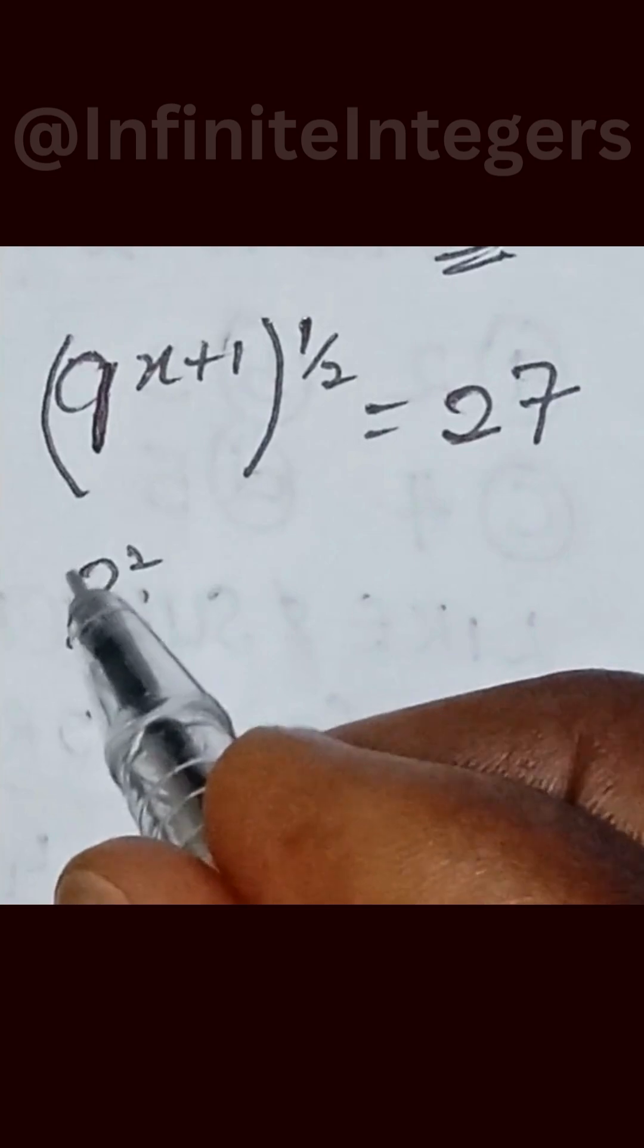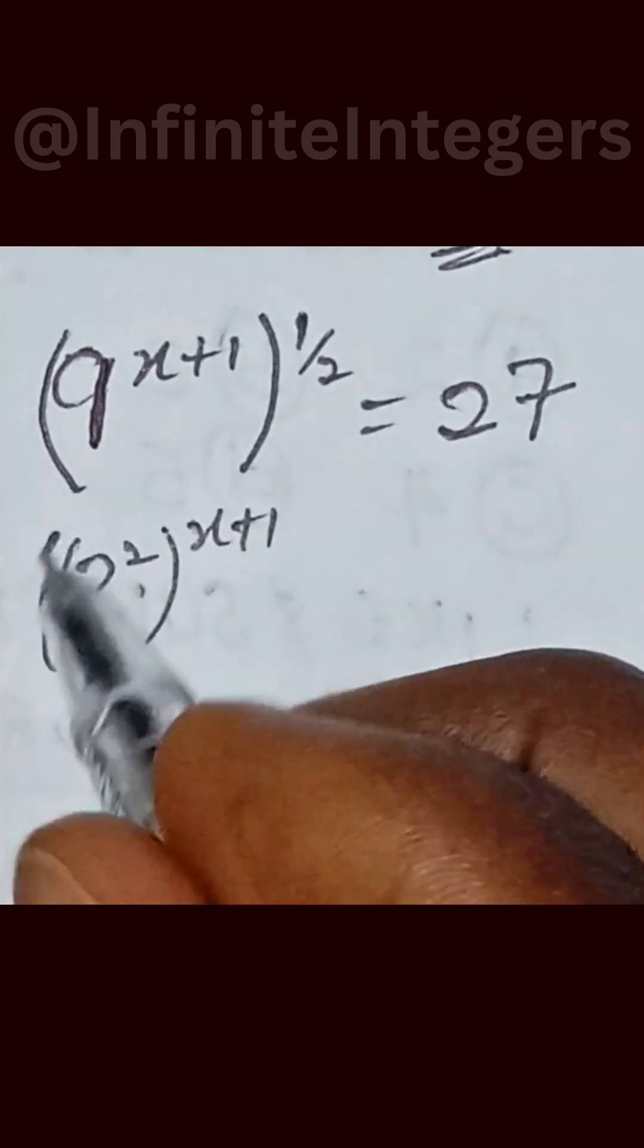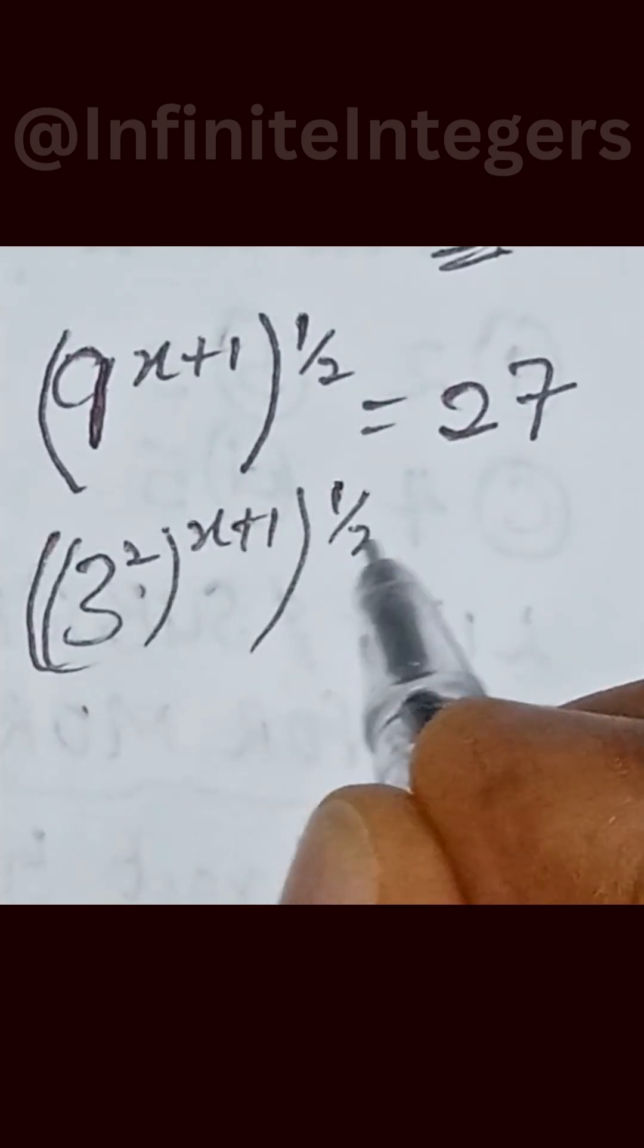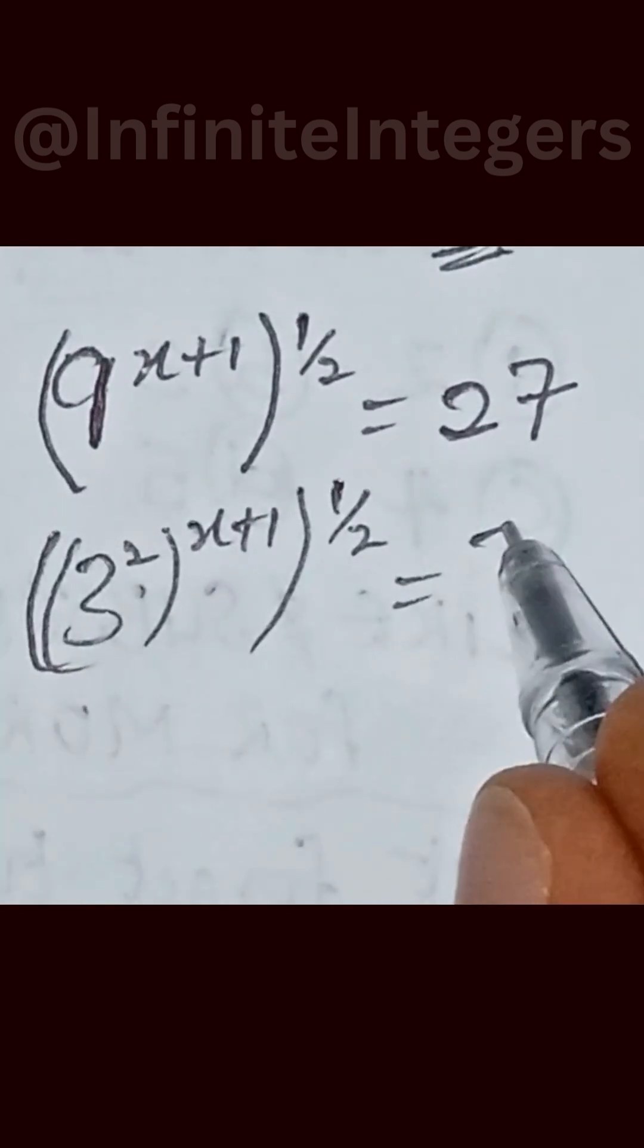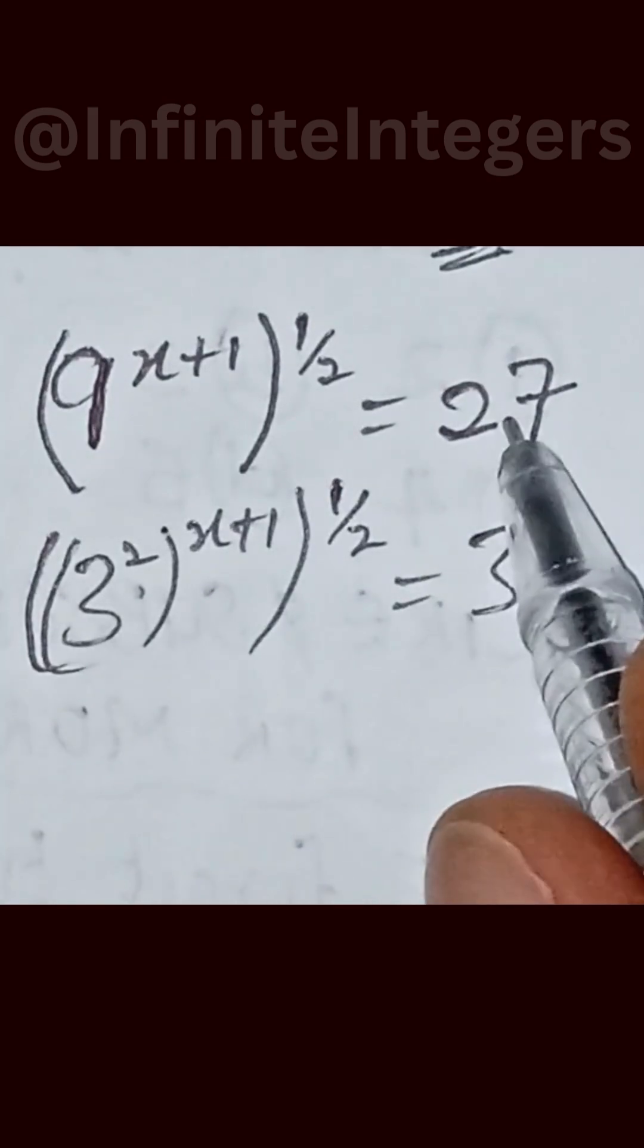What you can easily do is say 3 raised to power 2, into bracket, raised to power x plus 1, close the bracket, raised to power half. Then this 3 raised to power 3, we use to simplify this.